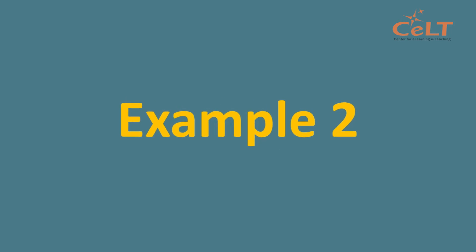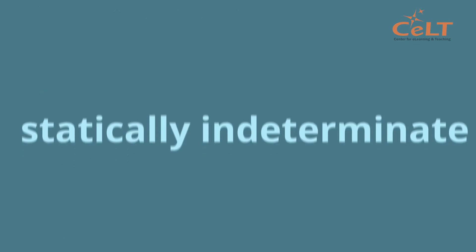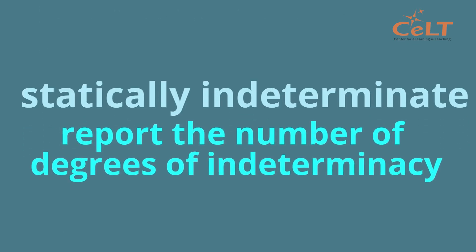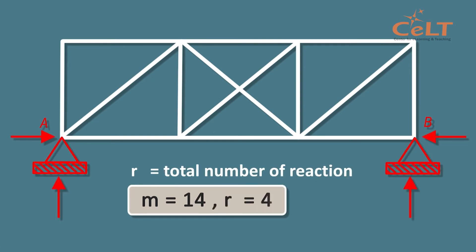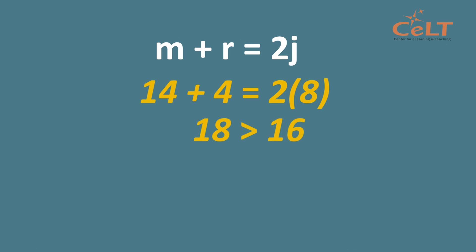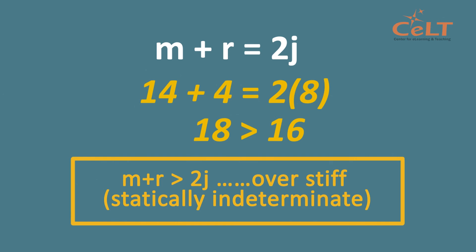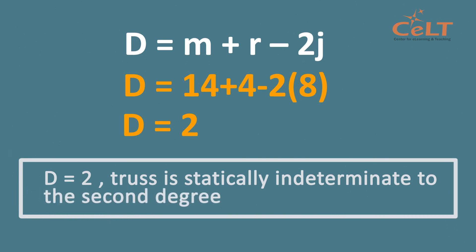Now let's look at Example 2. Classify the truss as statically determinate or statically indeterminate. If it is statically indeterminate, report the degree of indeterminacy. From the diagram, the total number of members is 14, total reactions is 4, and total joints is 8. Substituting into the formula, M plus R is more than 2J. Therefore, the truss is over stiff, or statically indeterminate. Calculating the degree of indeterminacy using D equals M plus R minus 2J, we find the truss is statically indeterminate to the second degree, where D equals 2.